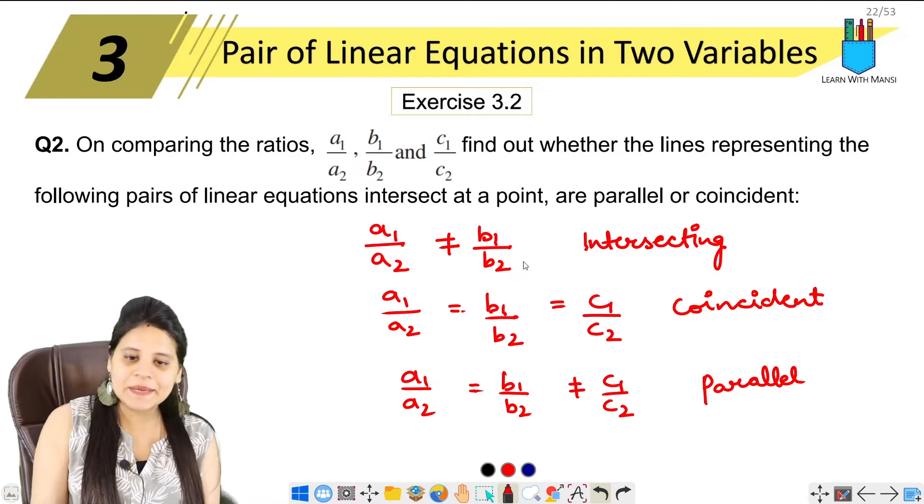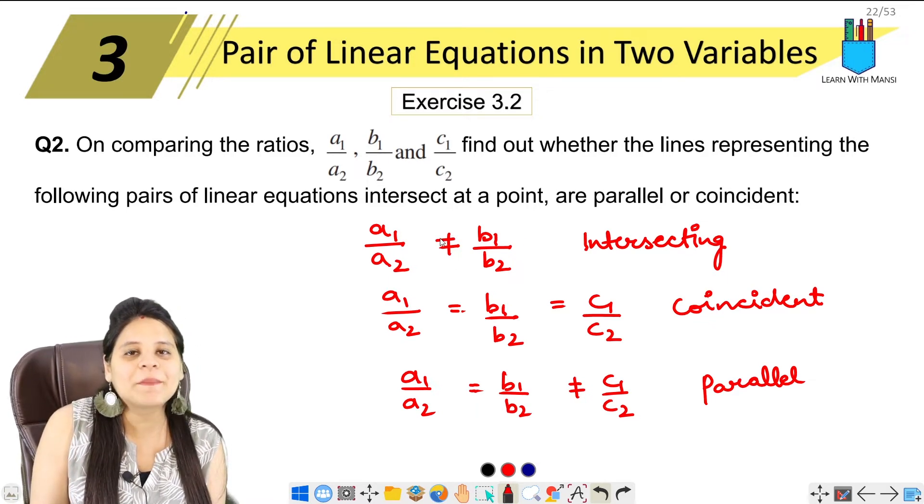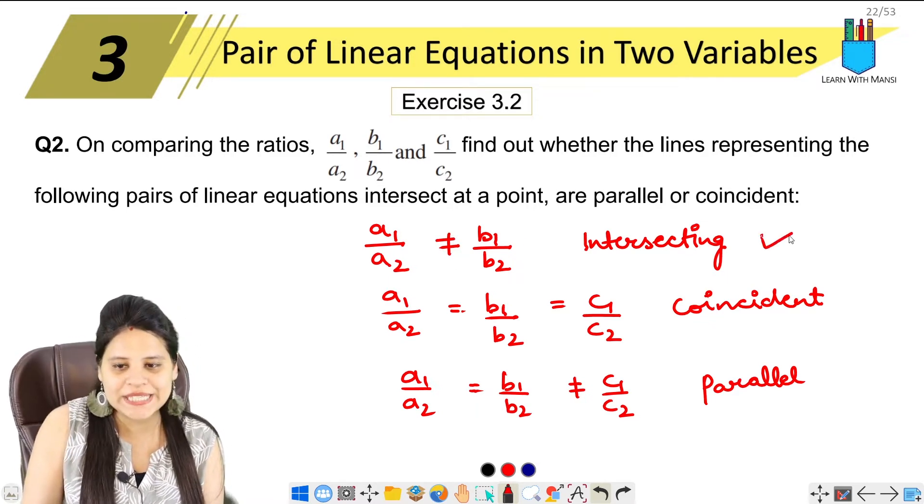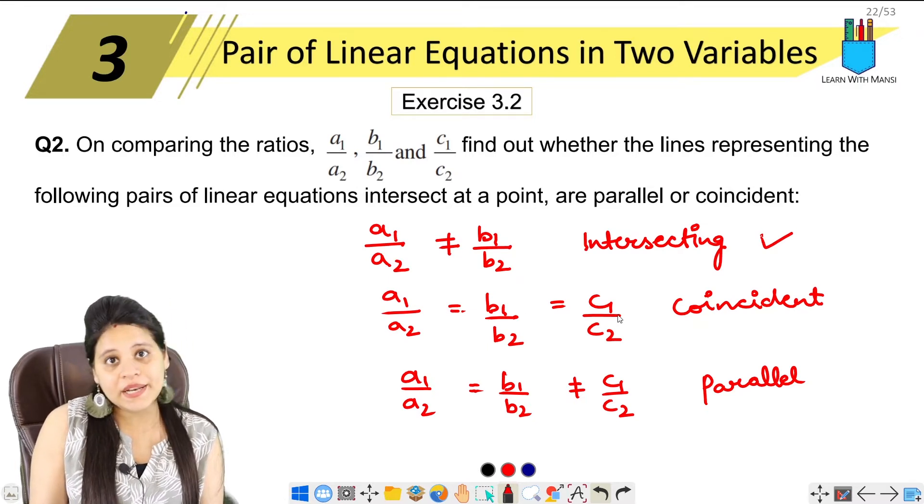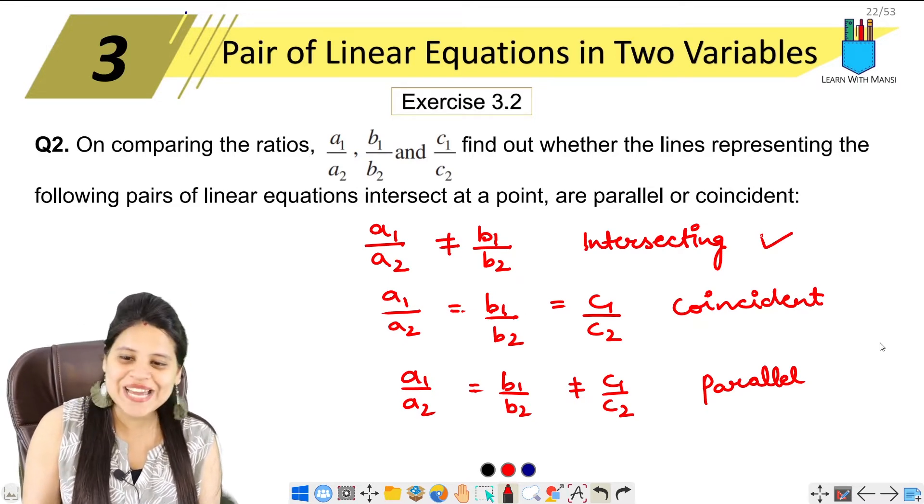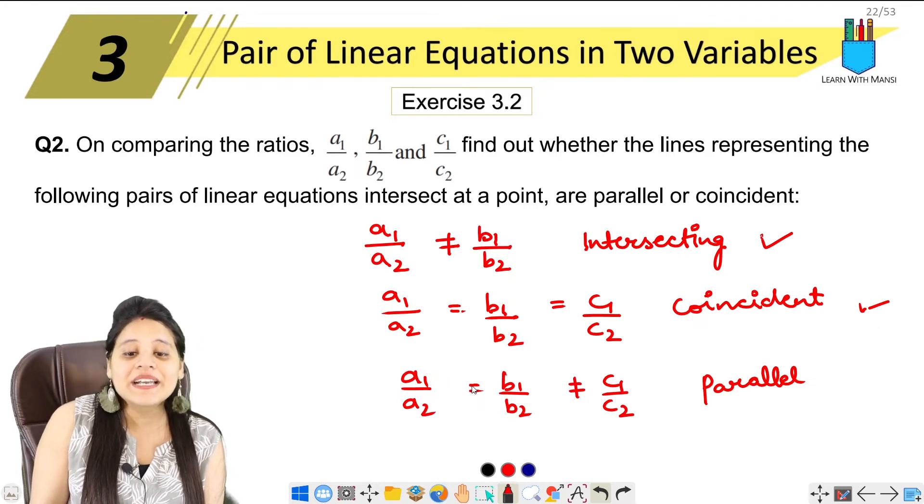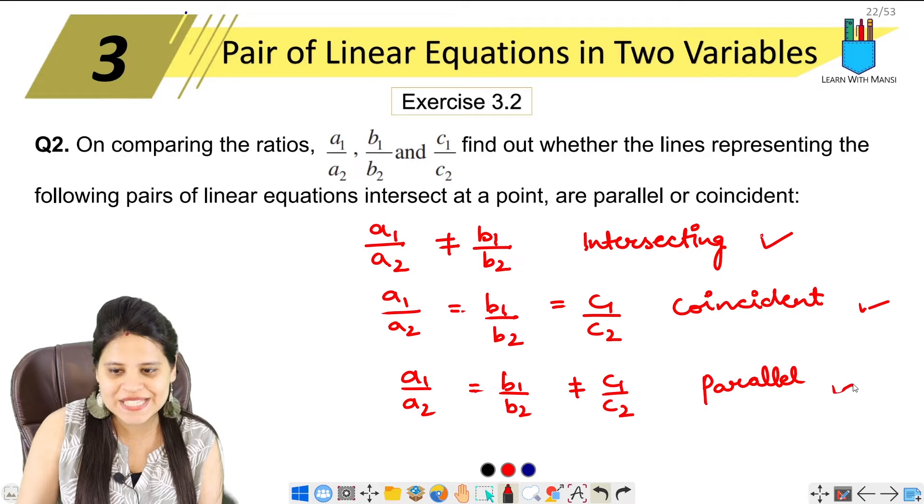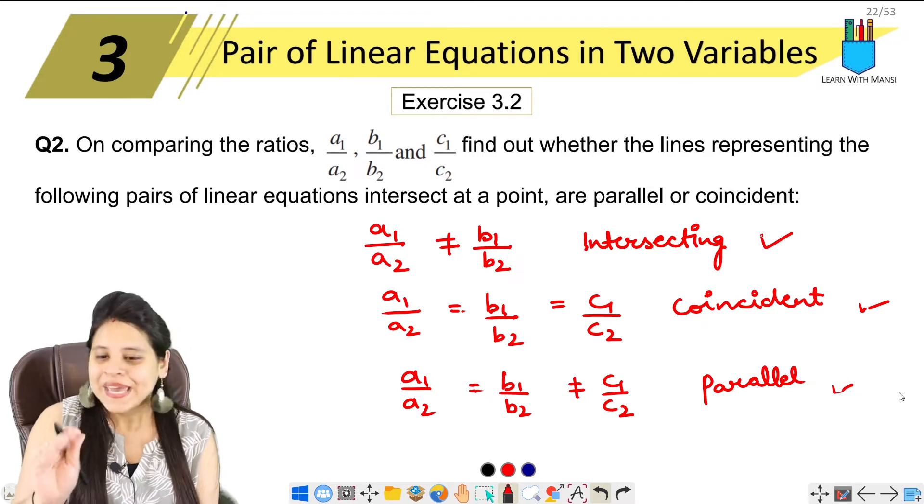Now I have told you how to remember this. If all ratios are unequal, the lines are intersecting. If all equals are equal, then it will be coincident. And if the first two are equal but the third is not, it means the lines are parallel.